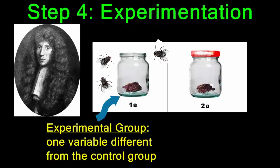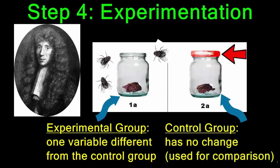The control group, which is the jar that has the lid, is used as a comparison. It does not allow the flies to get to the meat. This way, Francesco Redi would be able to discern whether or not the maggots in the meat were coming from the flies or from the meat.